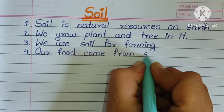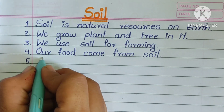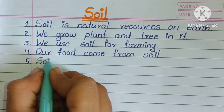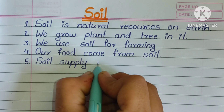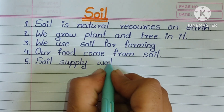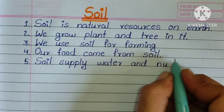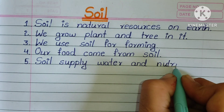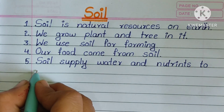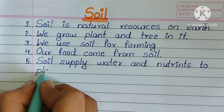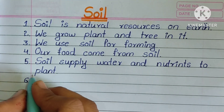Fourth one is our food comes from soil. Fifth one, soil supplies water and nutrients to plants.